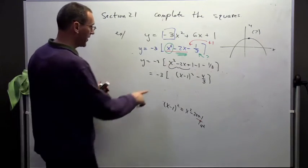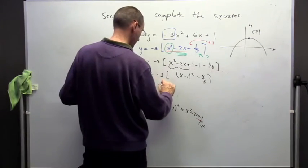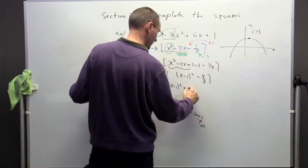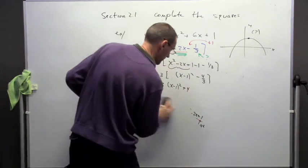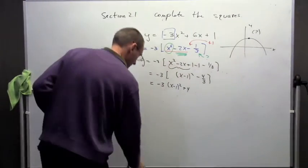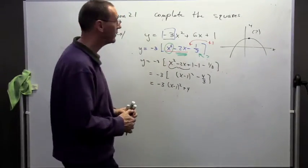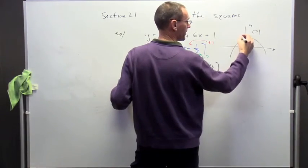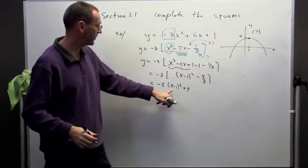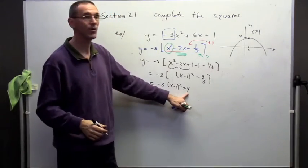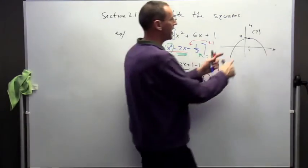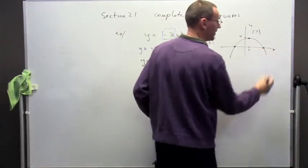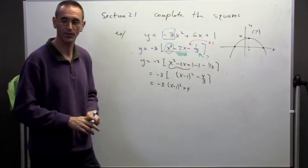Coming back to the result, I got a nice picture here. The vertex is at x equals 1, y equals 4. And because the coefficient is negative — the parabola opens downward — I know there have to be at least two real roots in this parabola.